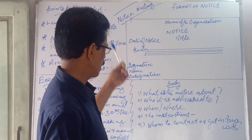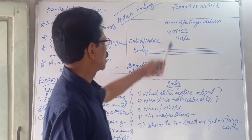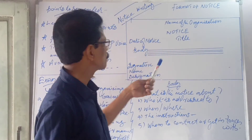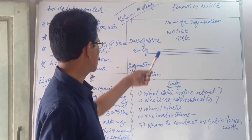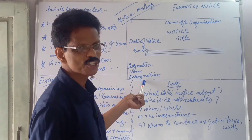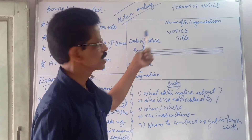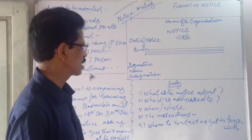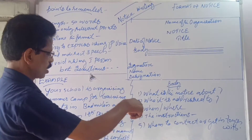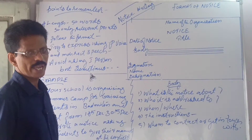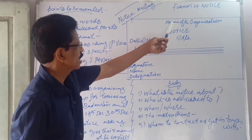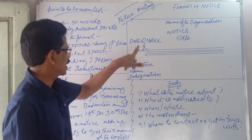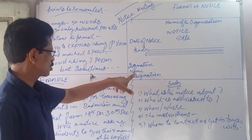Study the format very clearly. Write the name of the organization, write NOTICE in capital letters, give the topic as title, then date, then body — we are going to see that — then signature, name, and designation. Use your pencil and scale to draw a rectangular column and write within it. Don't write 'format of notice' — just write the name of the school or college, the heading NOTICE in capitals, then title, date, body, and signature.